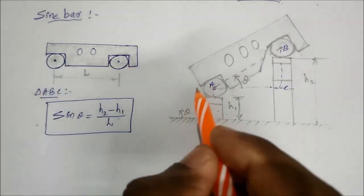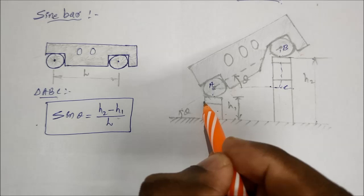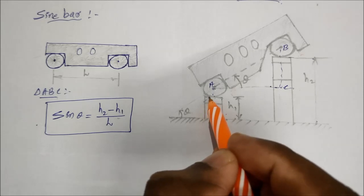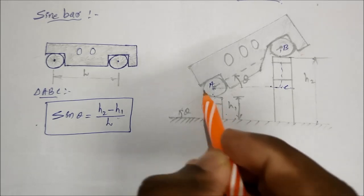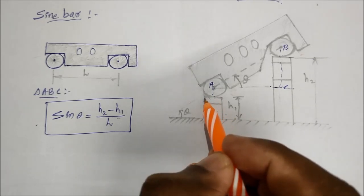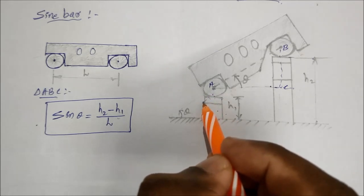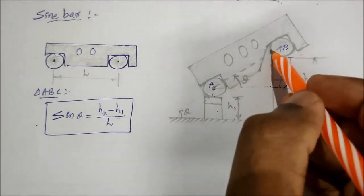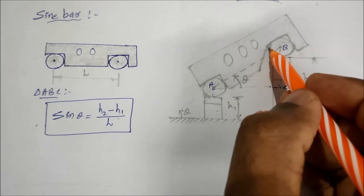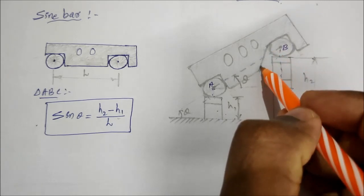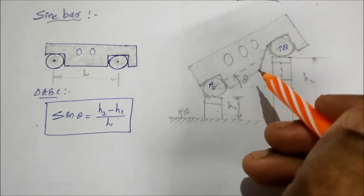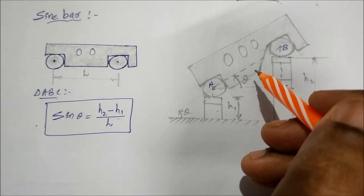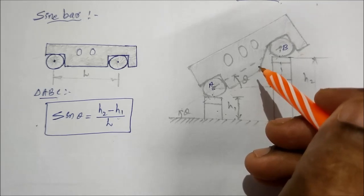This is the workpiece, slip gauge, and the additional parts of the setup. This is the sign bar setup used for measuring the angular dimension of the workpiece.